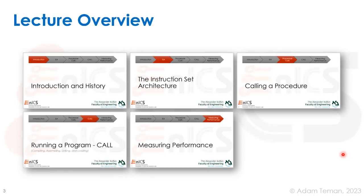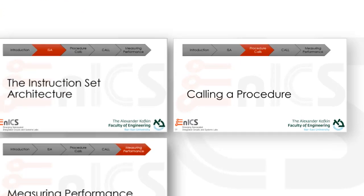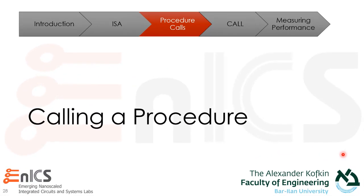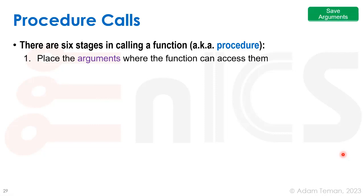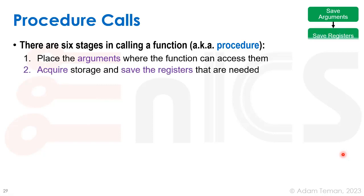After introducing the basics of instruction set architectures, let's go to the next part of our lecture on microprocessors, which is calling a procedure. There are six stages in calling a function or a procedure — these are the same things. First, we're going to place the arguments where the function can access them, so we're going to save our arguments.